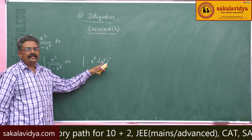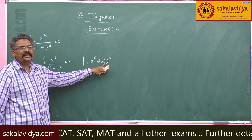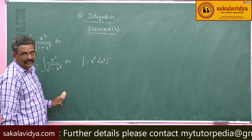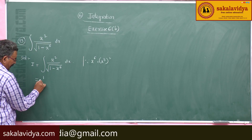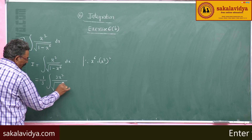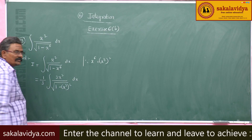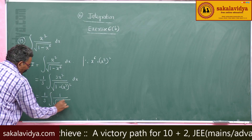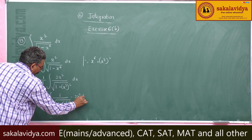If we say x cubed equals t, now we can solve this problem. The derivative of x cubed is 3x squared, but here we have only x squared. So multiply and divide by 3 to get 3x squared. This can be written as 1 by 3 integral of 3x squared by root of 1 minus x cubed whole square into dx.